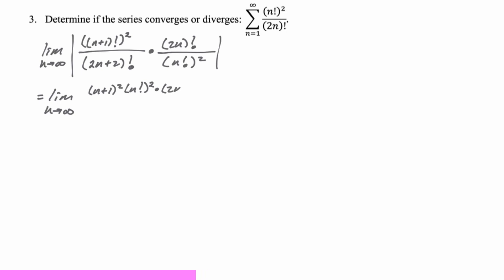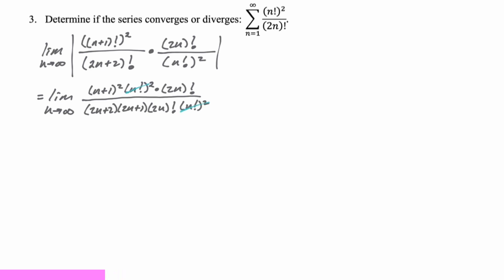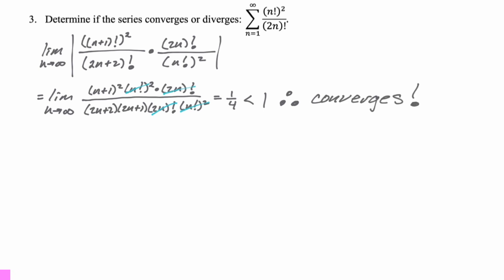In the denominator I have (2n+2)(2n+1) times (2n)! — just peeling off from the factorial — plus the remaining (n!)². The (n!)² cancel and the (2n)! cancels, leaving (n+1)² over (2n+2)(2n+1). That's essentially n² over 4n² in the limit. Taking the limit, we have coefficient 1 on top and 4 on the bottom, both squared, so the limit is 1/4. Since 1/4 < 1, this series converges by the ratio test.